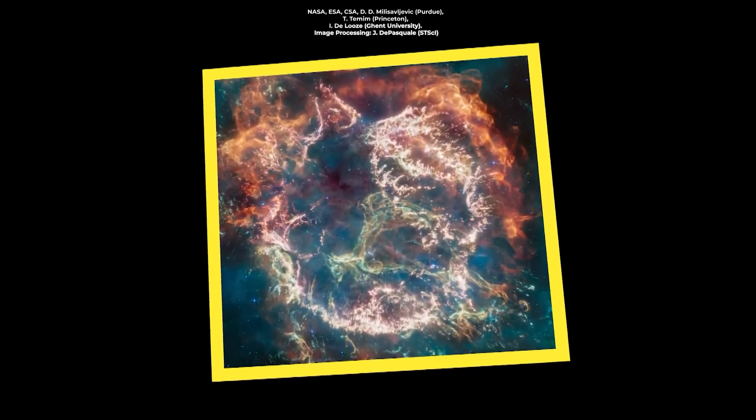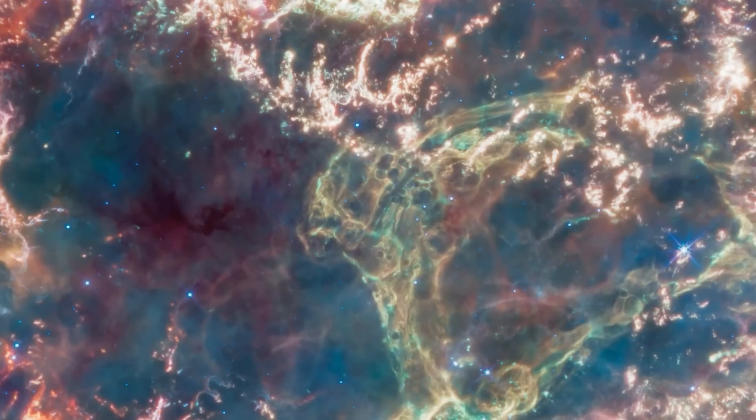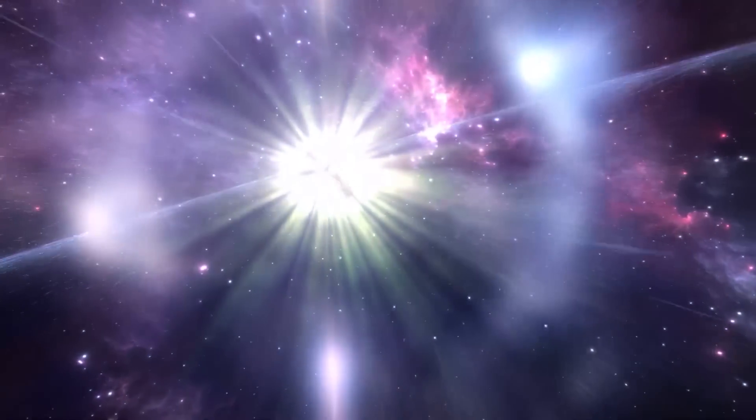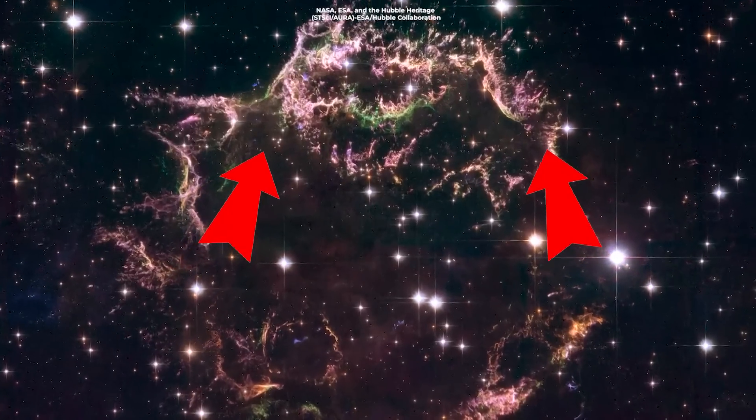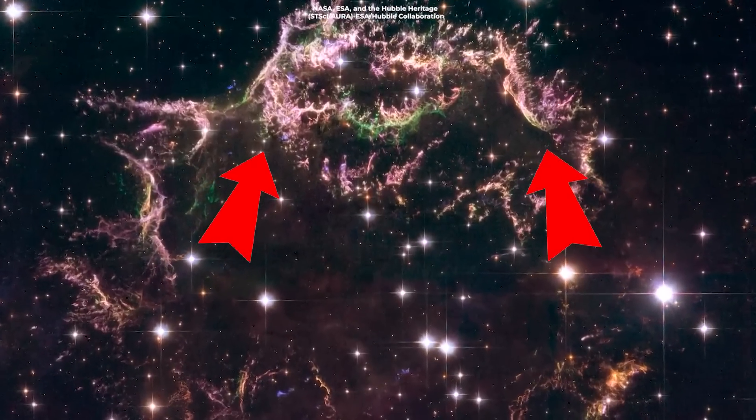At the top of the newly released JWST image and at the outer edge of a bubble of material blown out by the supernova, veils of orange and red represent emissions from warm dust.